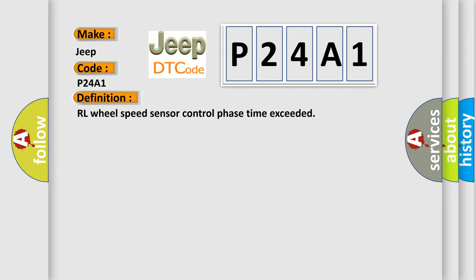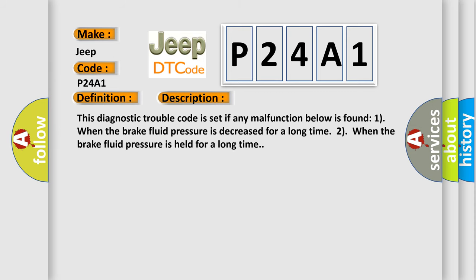And now this is a short description of this DTC code. This diagnostic trouble code is set if any malfunction below is found. One, when the brake fluid pressure is decreased for a long time. Two, when the brake fluid pressure is held for a long time.